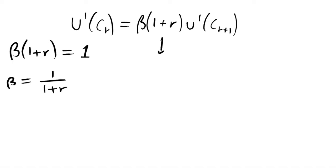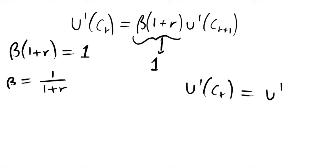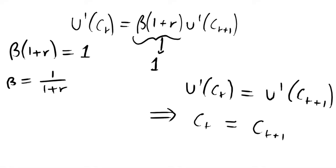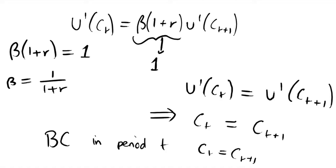If we substitute in that this term is now 1 into our Euler equation, we get the very simple result that marginal utility in periods t and t+1 are equal. From this we can infer that consumption in these two periods is equal, because we have the same utility representation in them. So for all periods t, we must have that ct equals ct+1 for all t.